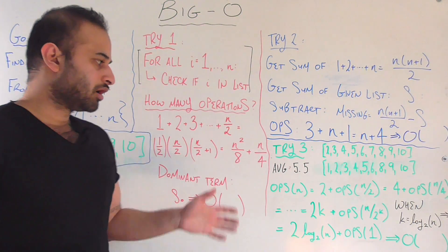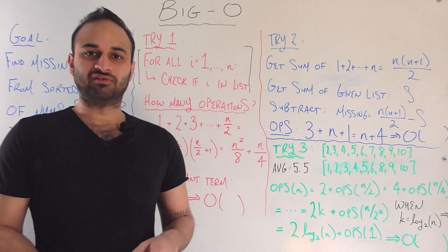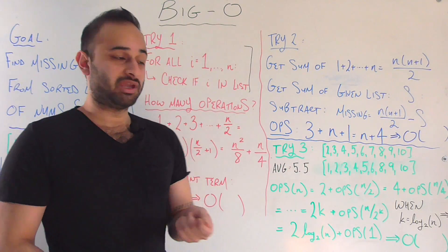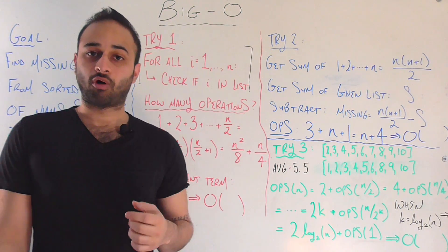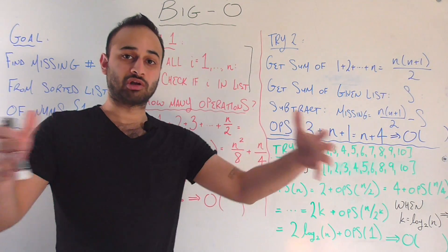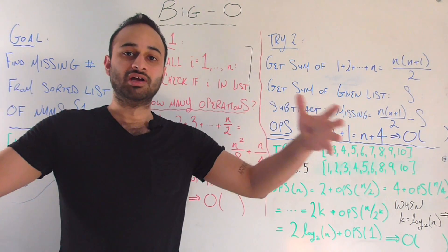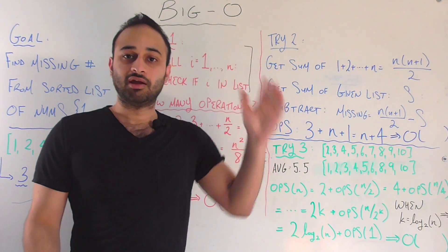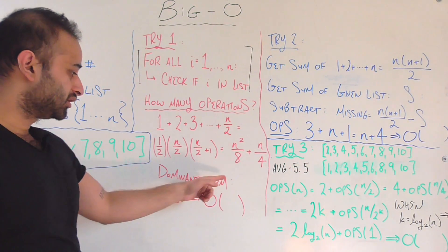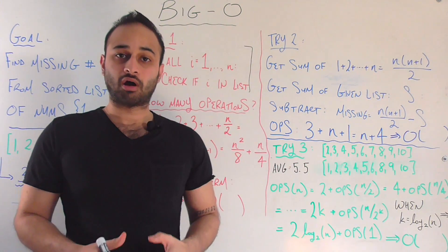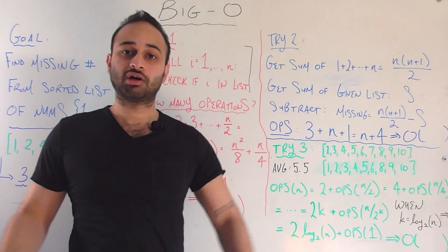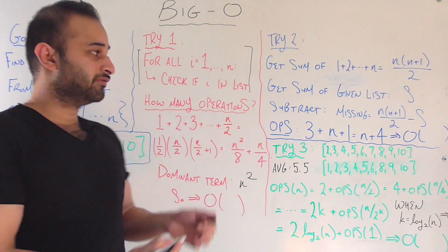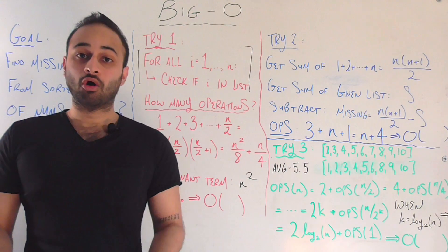By dominant term, we mean looking at n squared over eight versus n over four — which one is going to be biggest as n gets larger and larger? As we know, a quadratic function like n squared grows at a much faster rate than a linear function like n. So the dominant term, the one that's going to take over in the long run, is n squared. For that reason, we say that the time complexity of this method is big O of n squared, written as O(n²).